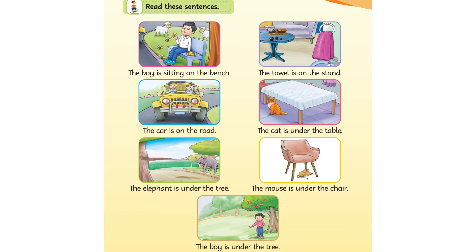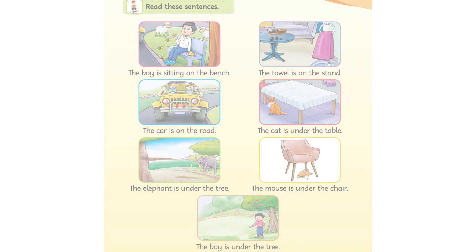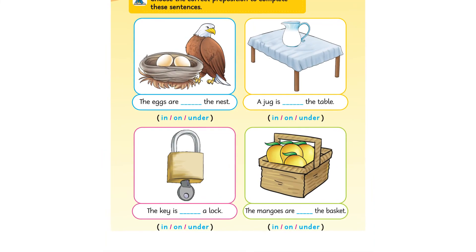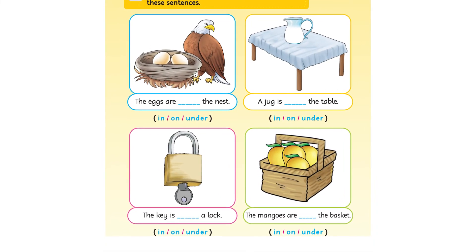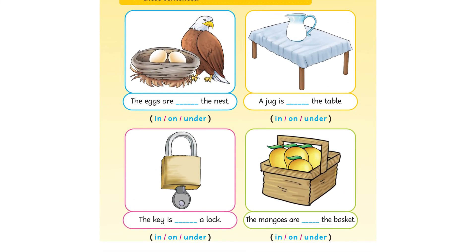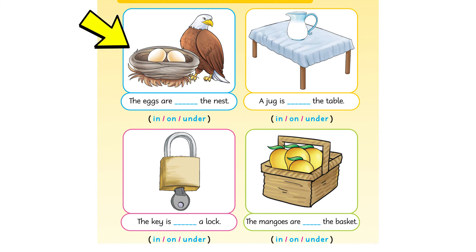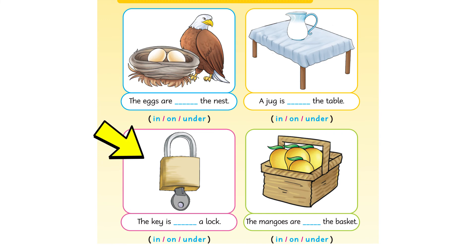Prepositions are words which tell us about the position of objects. Now let us choose the correct preposition to complete these sentences. The eggs are in the nest. A jug is on the table. The key is in a lock. The mangoes are in the basket.